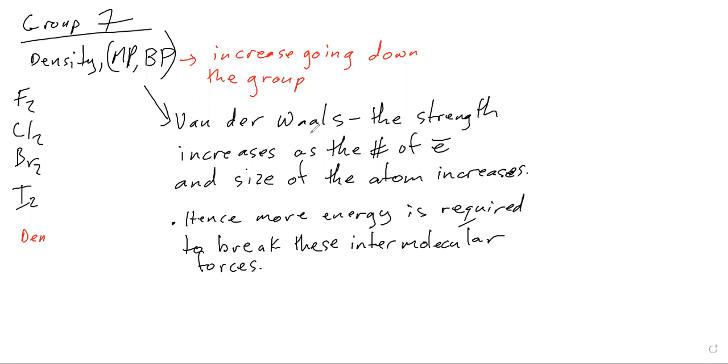So as I go down the group the atom gets bigger and the number of electrons increase. That makes the Van der Waals force get stronger. Get stronger, more energy is needed. For density, the atoms get heavier as I go down the group. The atoms increase in size going down the group and get heavier because size and mass is different.